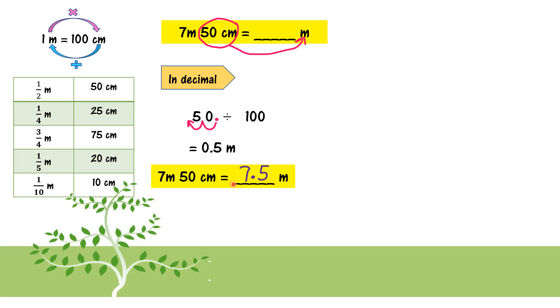After that, we need to combine back with the 7m. 7m is whole number. So how to write 7? 7.5 meter. 7, because it's whole number, you put it in front. 7.5 meter.